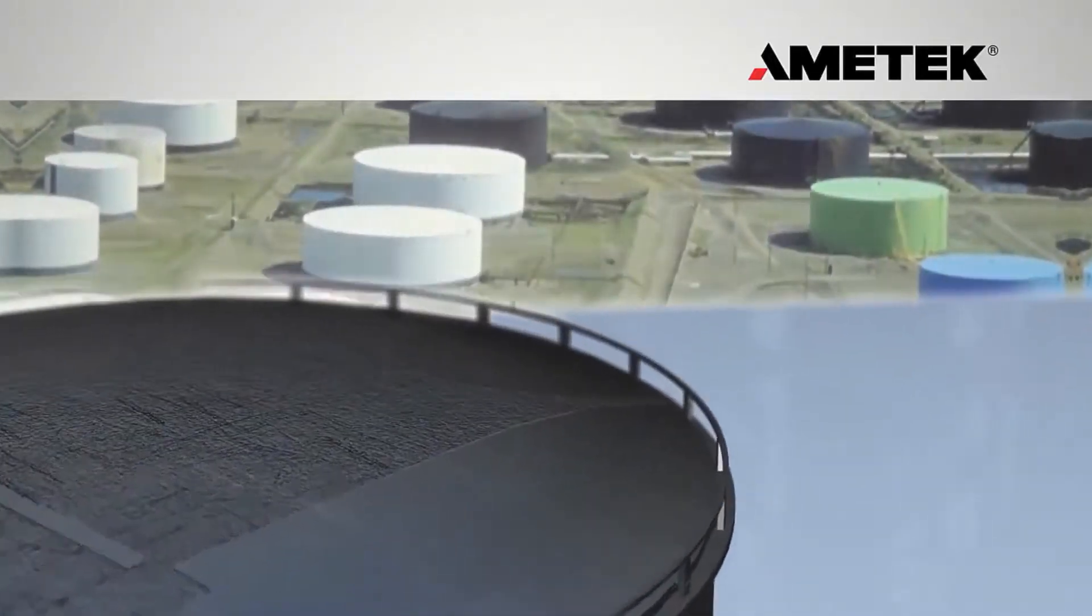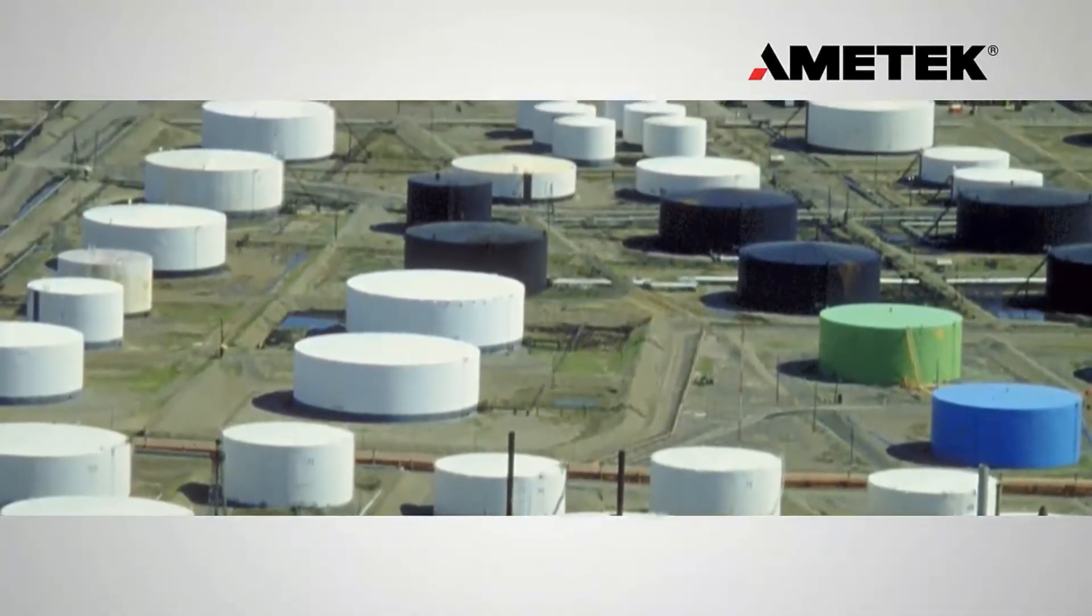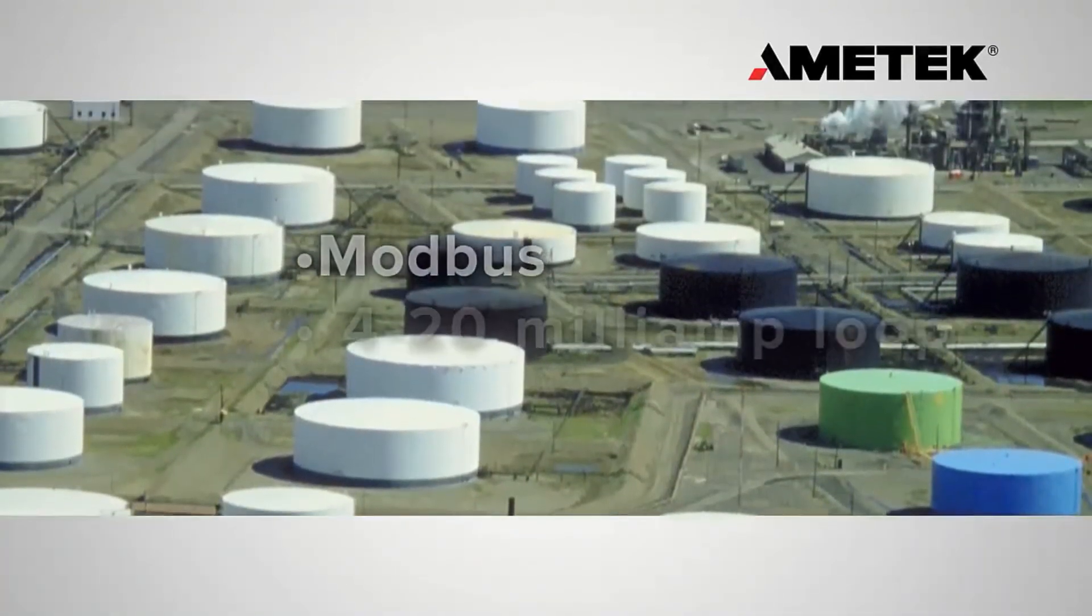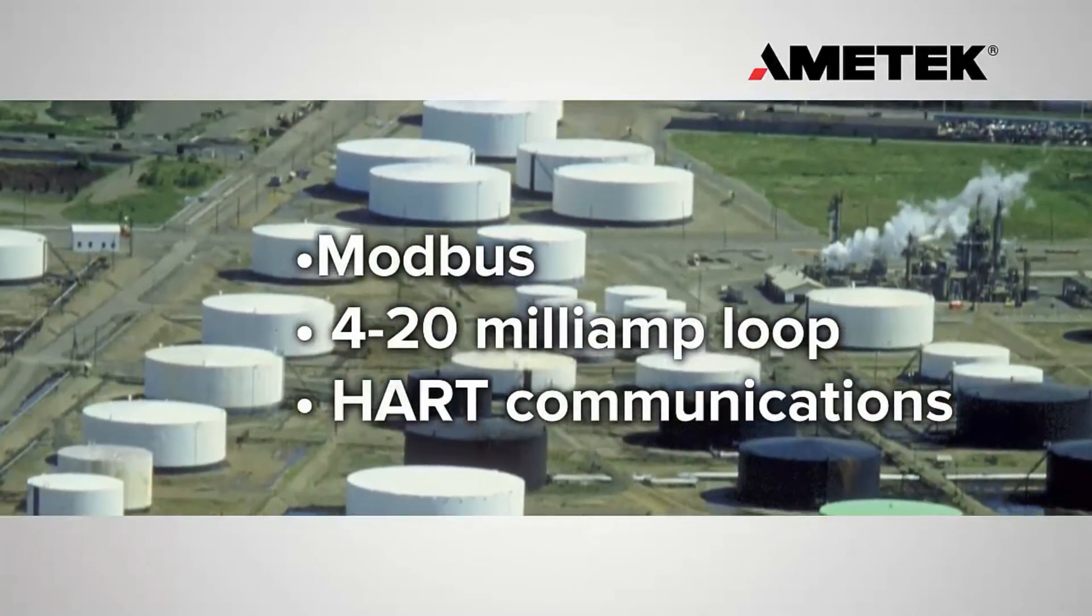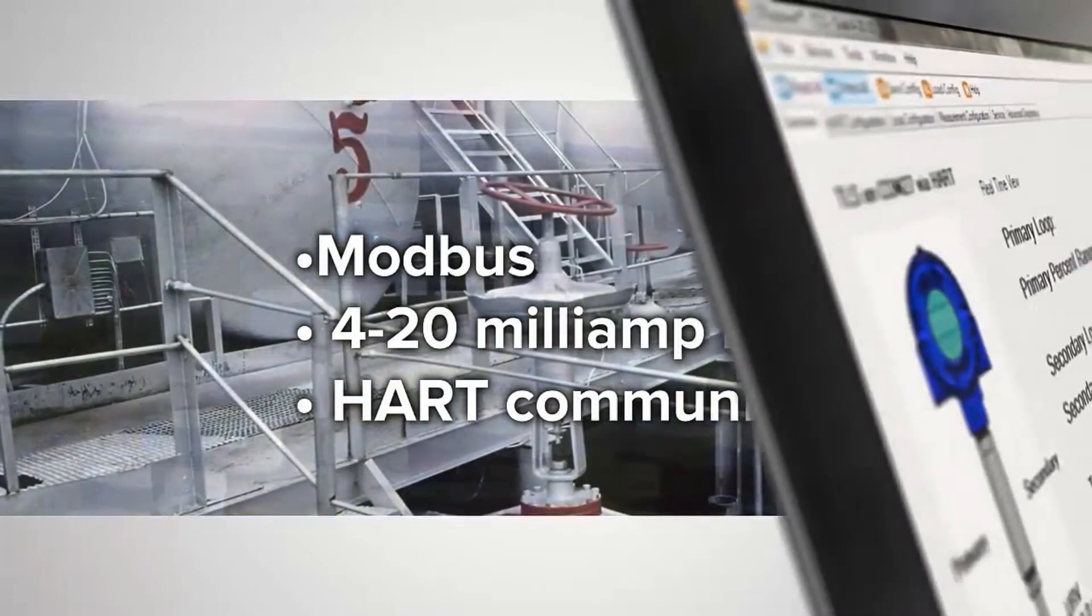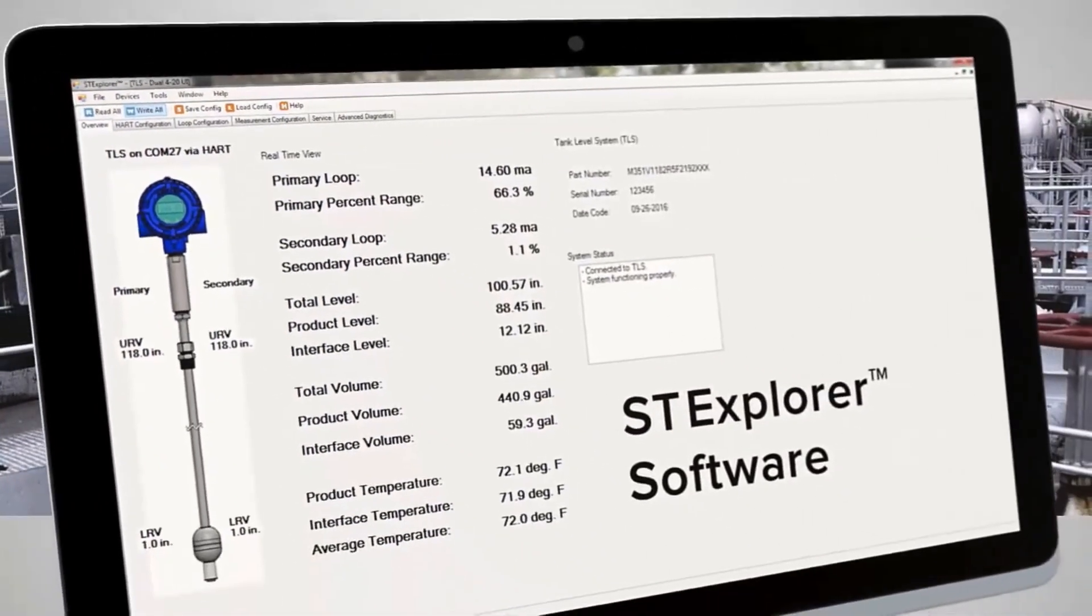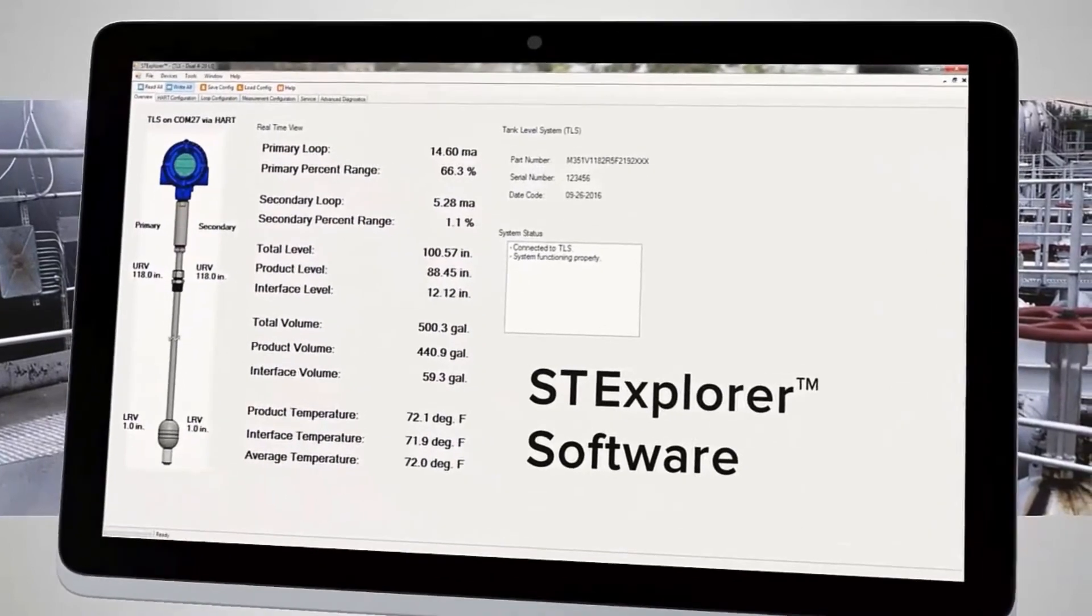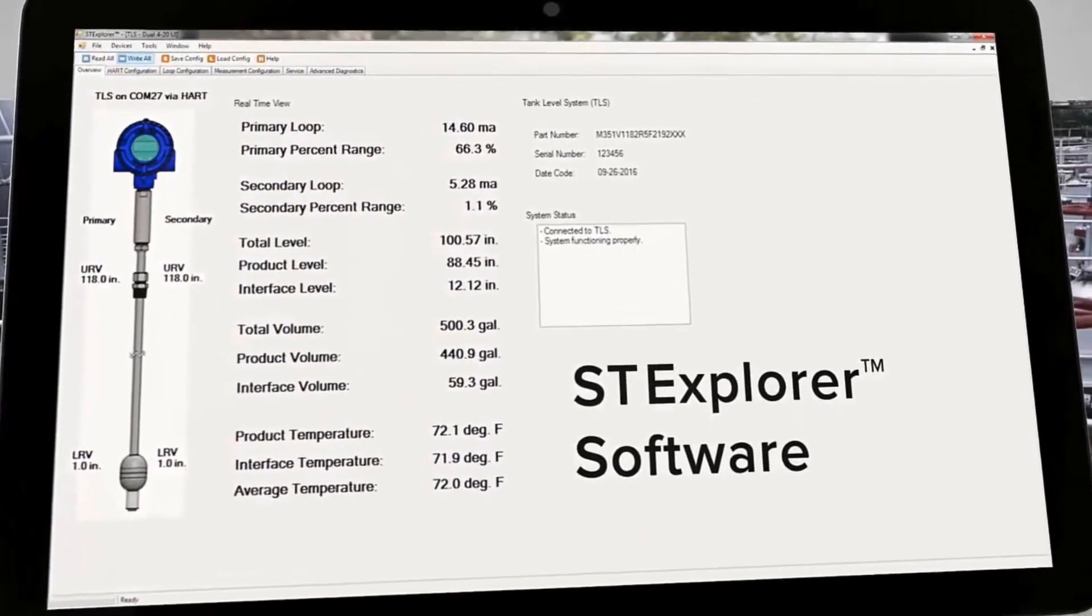The Drexelbrook Total Tank Level System easily integrates into existing control systems that have standard protocols, such as Modbus, 4 to 20 milliamp loop, or HART communications. Each instrument can be set up directly through the Ametek ST Explorer software, which can be downloaded free of charge from our website. This makes installation and commissioning of the instrument easy.